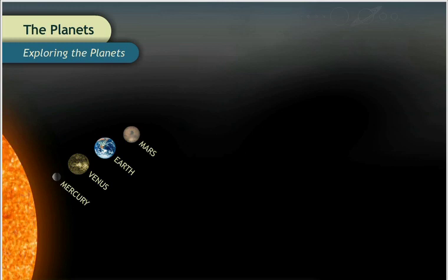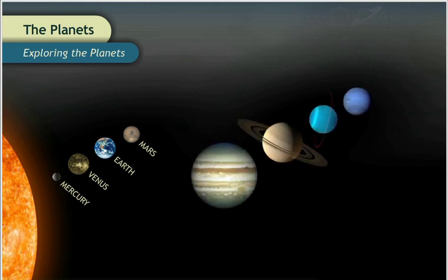All the inner planets have some things in common. They all have solid rocky surfaces and are much smaller than the four outer planets.